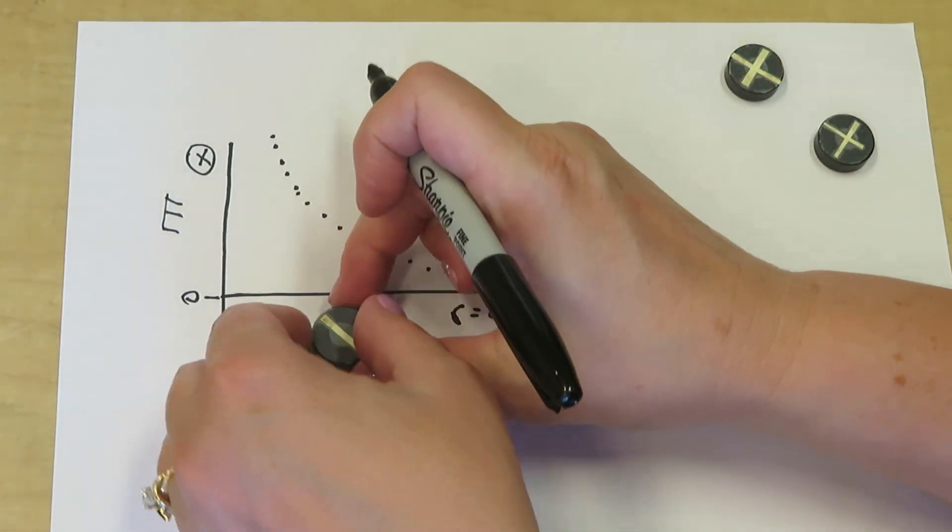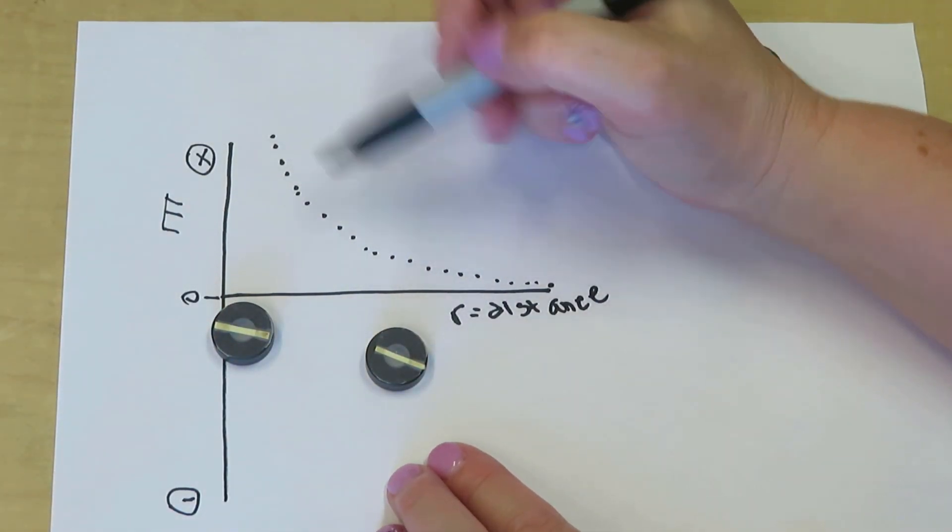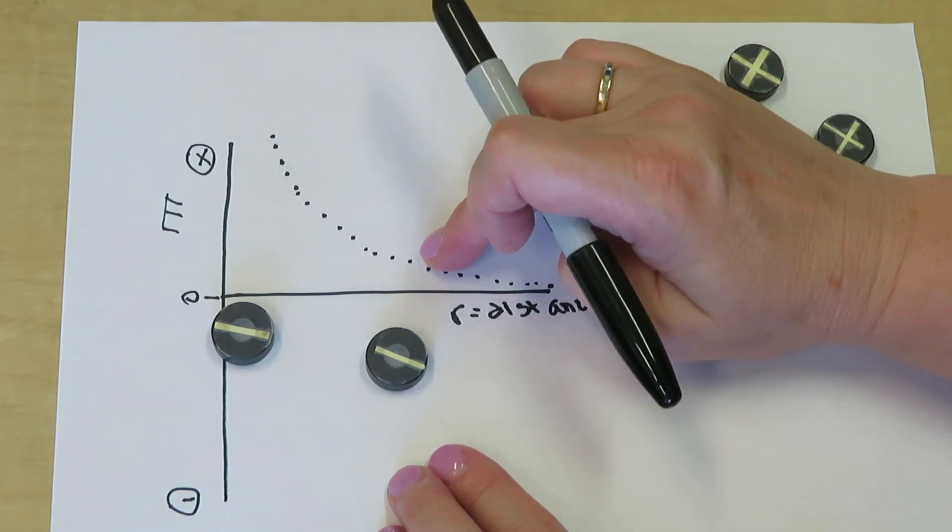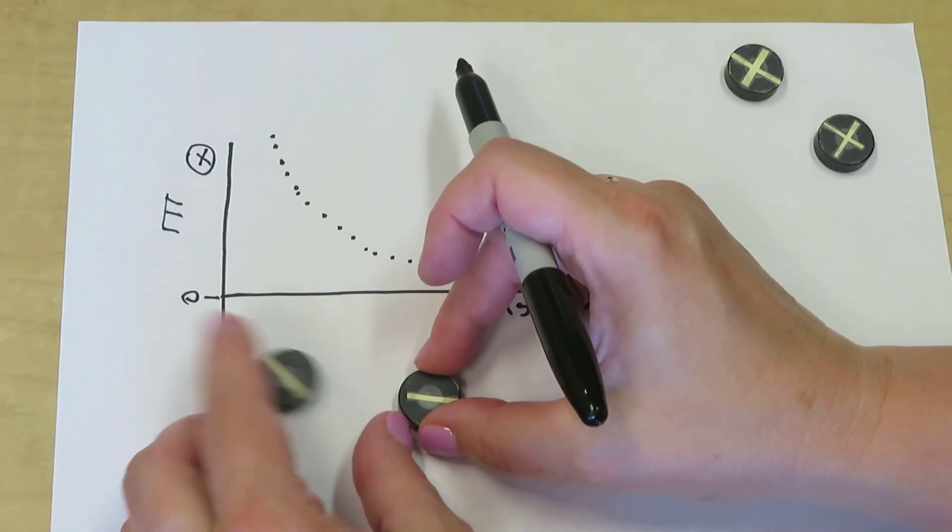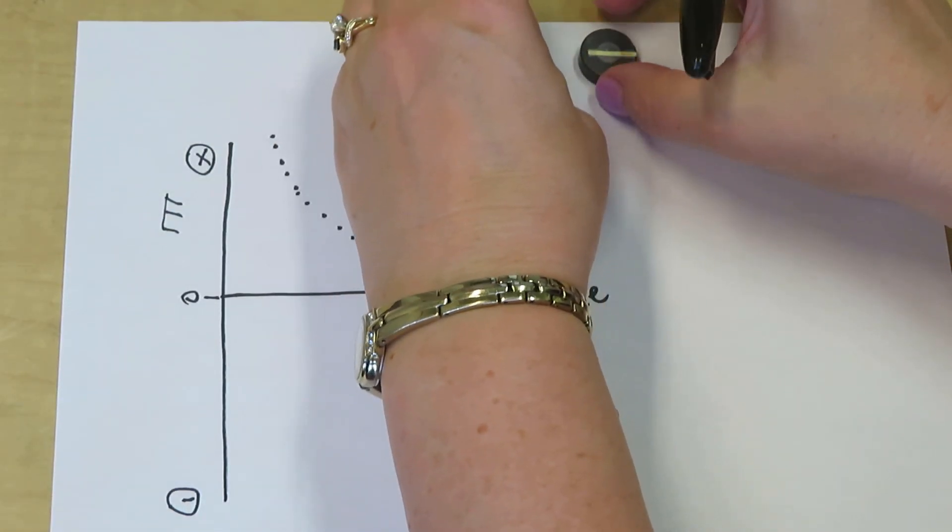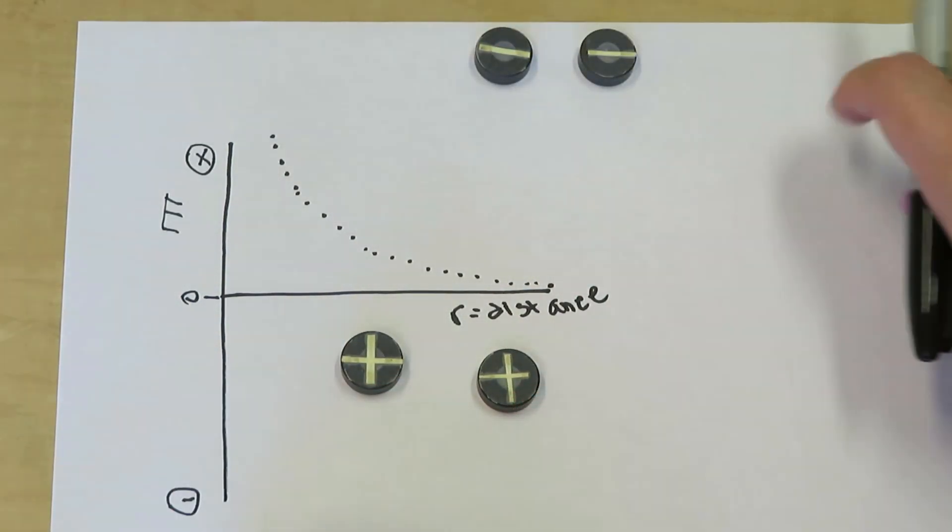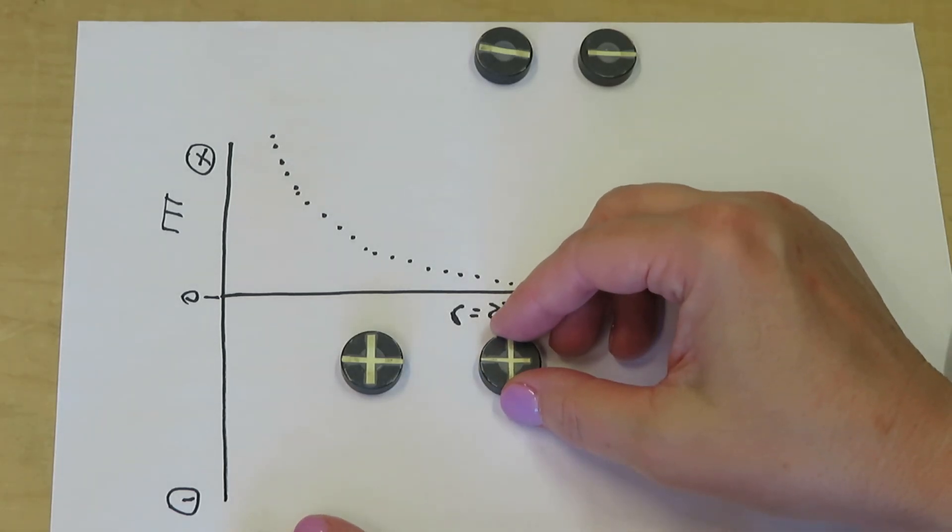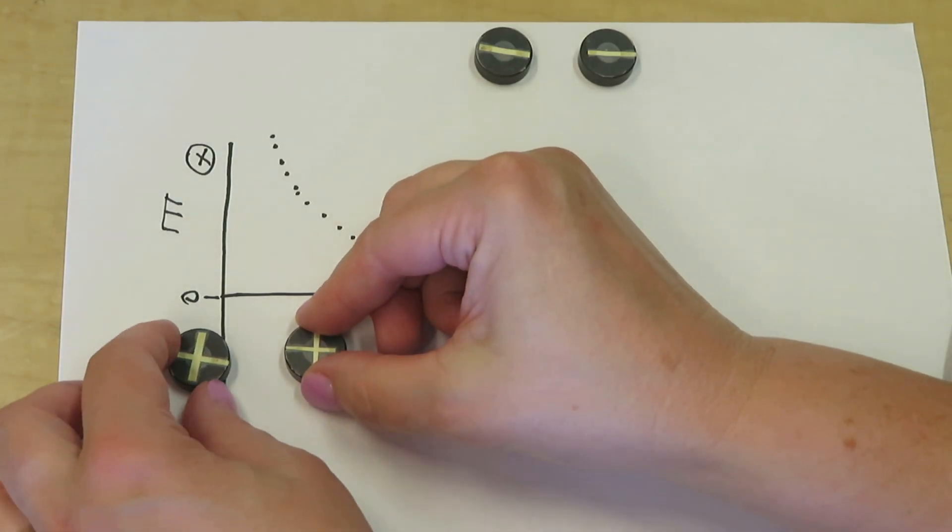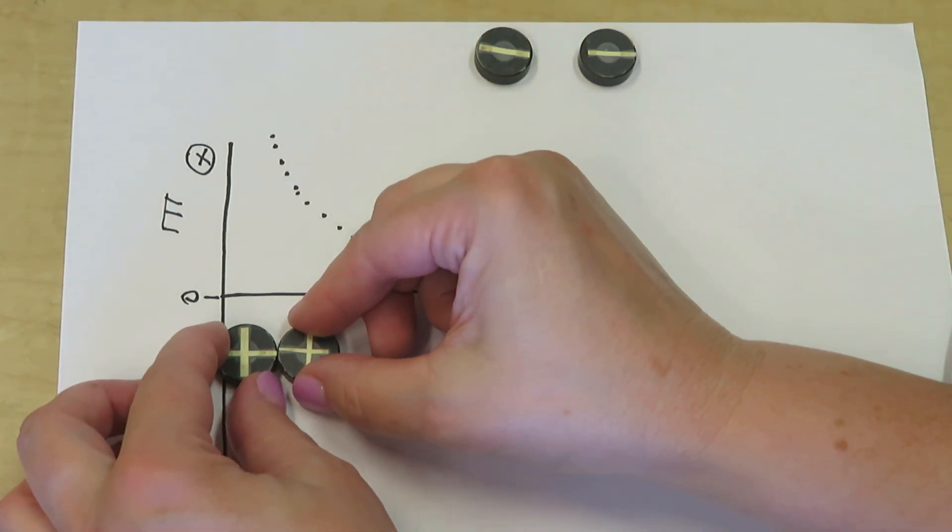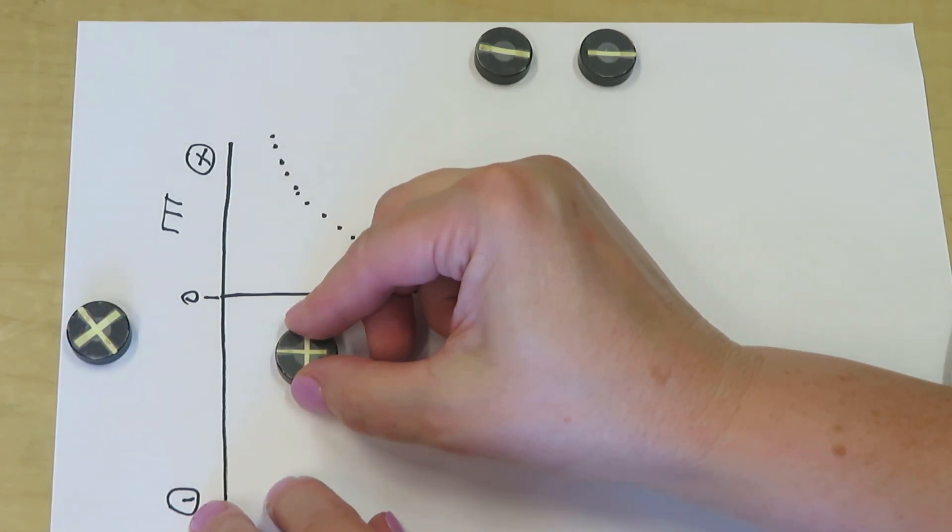It also means that as they go further apart, energy goes down and decreases, which you see when we push these together and then release one. The same scenario is true of two positive charges. As they approach one another from infinity, in order to get them closer together, we need to put energy in. So energy increases as they're closer together and decreases when they are further apart.